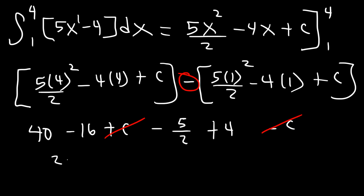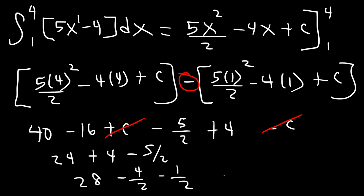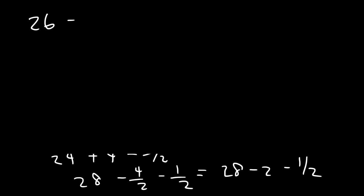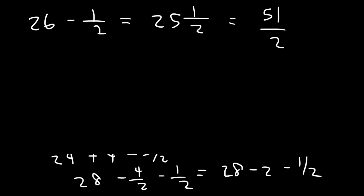40 minus 16 is 24, and 24 plus 4 is 28. For 5 over 2, I can break that into 4 over 2 minus a half, since negative 4 minus 1 is negative 5, and 4 divided by 2 is 2. So I have 28 minus 2 which is 26, and 26 minus a half. As a mixed number that's 25 and a half, or 25.5. As an improper fraction: 25 times 2 is 50, plus 1 is 51, so the final answer is 51 over 2.